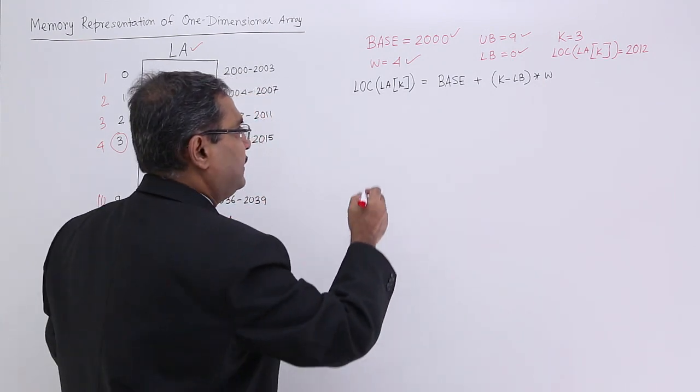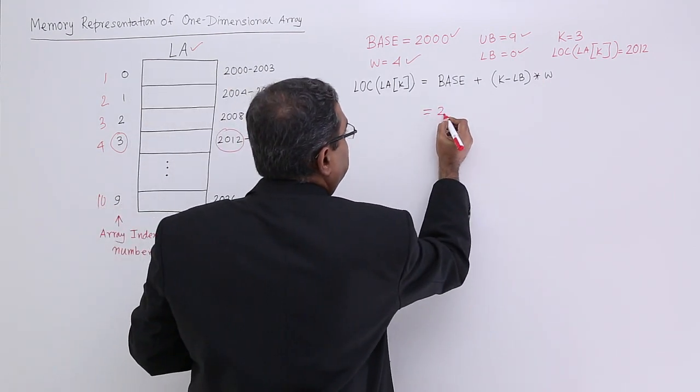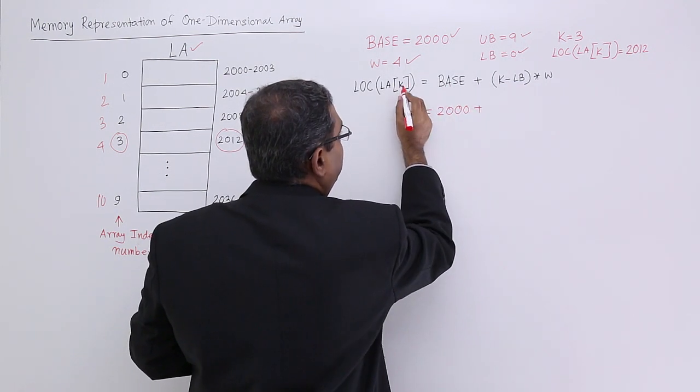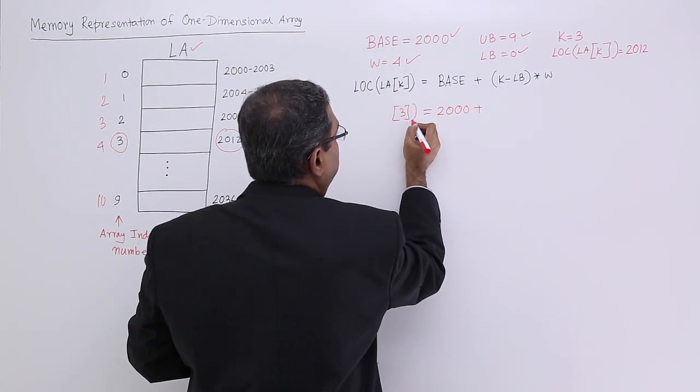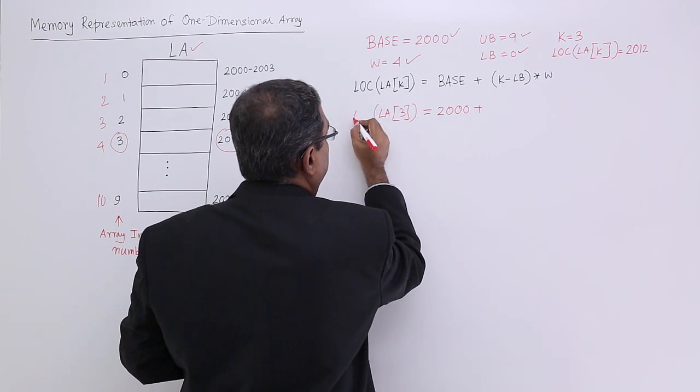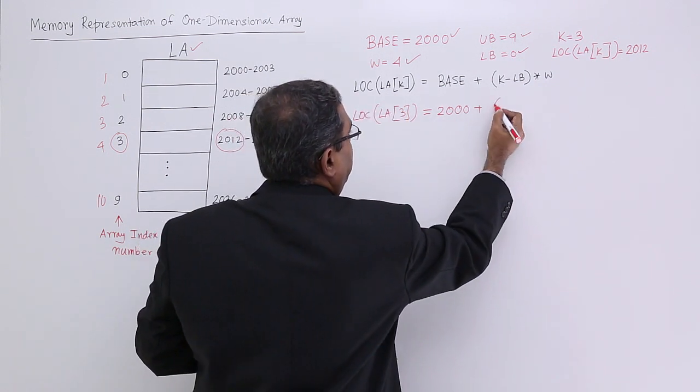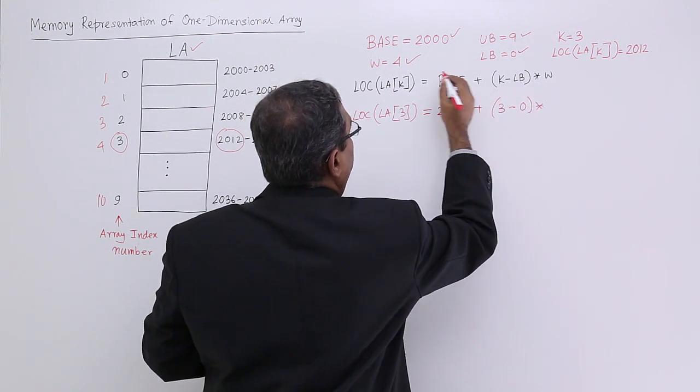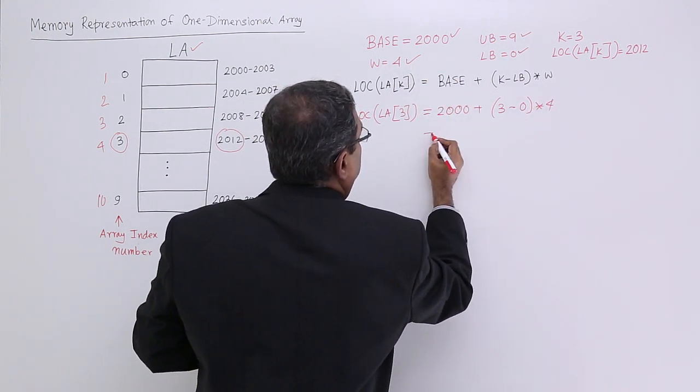Let me put the values. Let me check. Base address is 2000, I got it from here. And if you consider k is equal to 3, then k is equal to 3 minus lower bound, I know it is 0, and w, I know it is 4. That is mine.